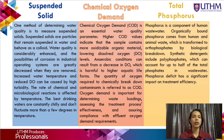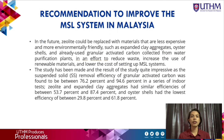Total phosphorus is a component of human wastewater. Organically bound phosphorus comes from human and animal waste and is transformed to orthophosphate by biological breakdown. Synthetic detergents include polyphosphate, which can account for up to half of the total phosphate in wastewater. Phosphorus deficit has a significant impact on treatment efficiency. As a recommendation, zeolite could be replaced with less expensive and more environmentally friendly materials such as expanded clay aggregate and granular activated carbon from waste purification plants, to reduce waste and lower the cost of setting up the MSL system. Studies found suspended solid removal efficiency of granular activated carbon was between 76.2% and 94.6%, zeolite and expanded clay aggregate achieved between 53.7% and 87.4%, while hoistation had the lowest efficiency of between 39.8% and 91.8%.